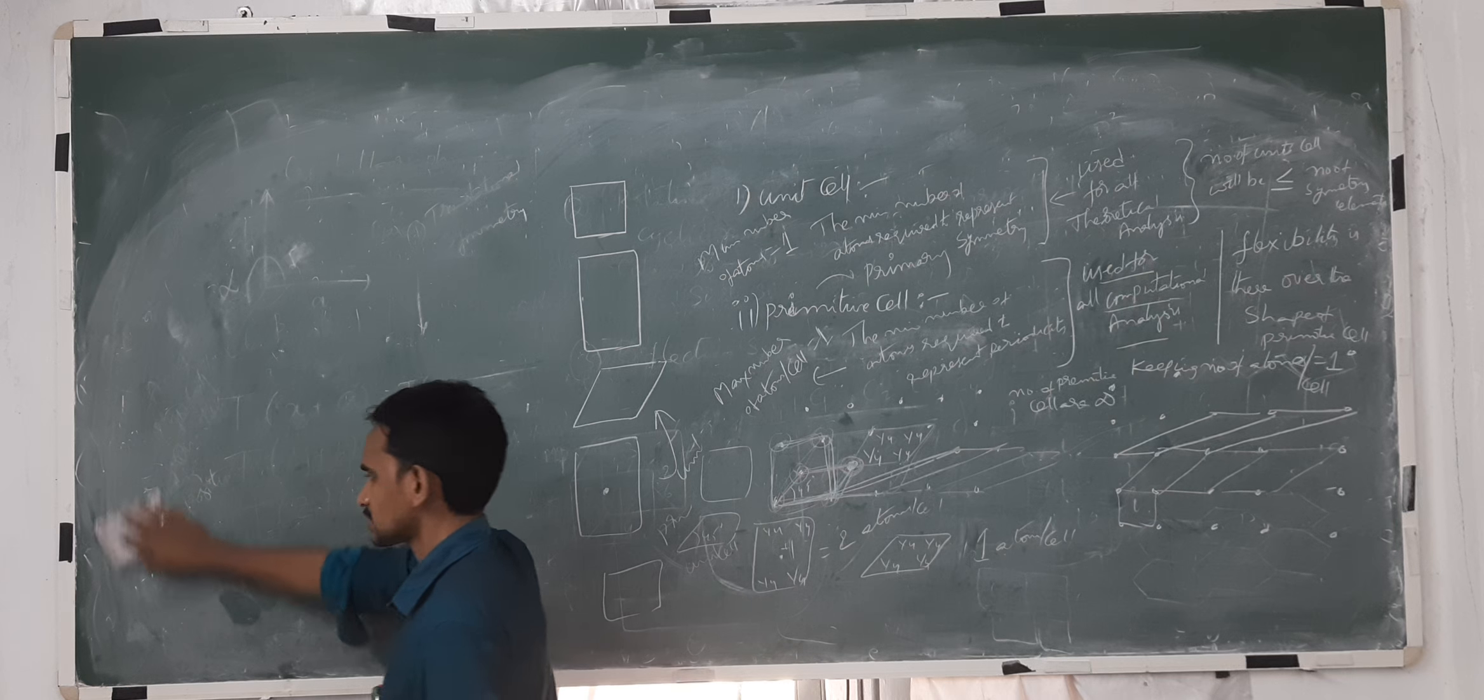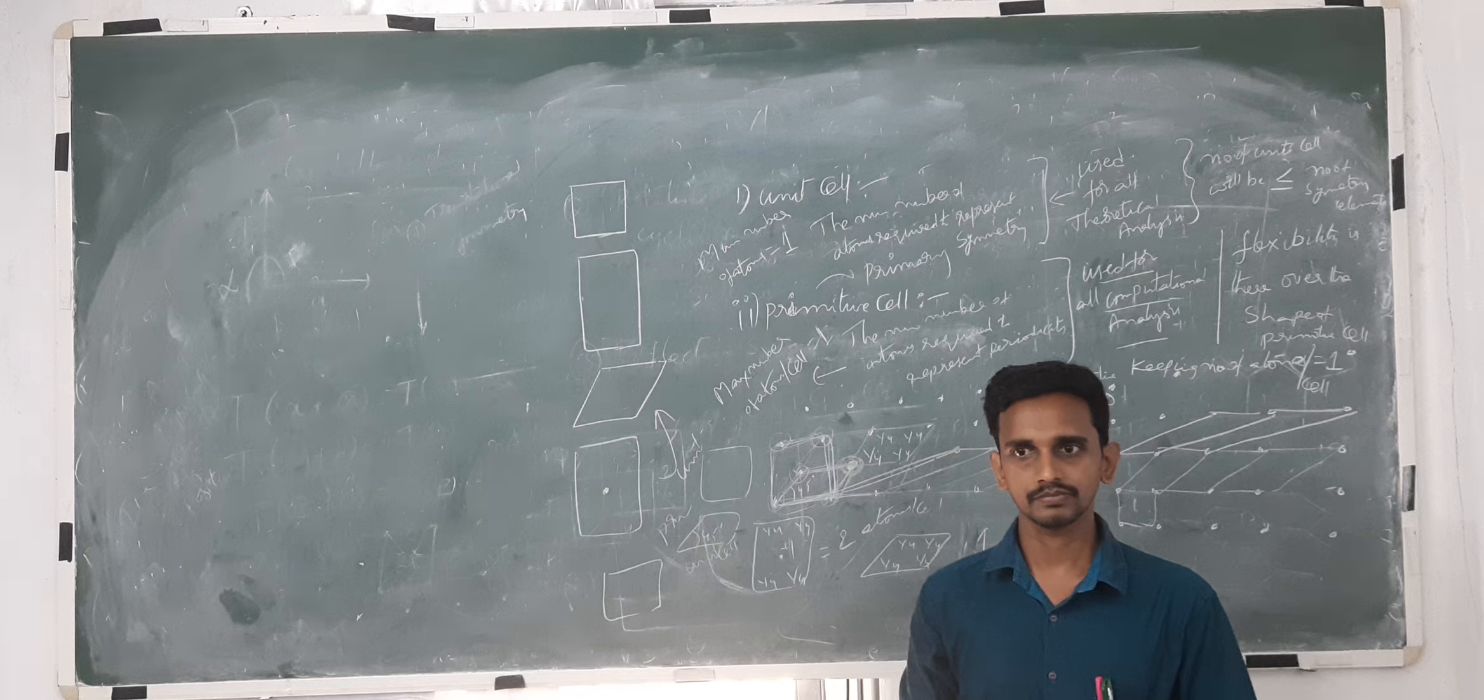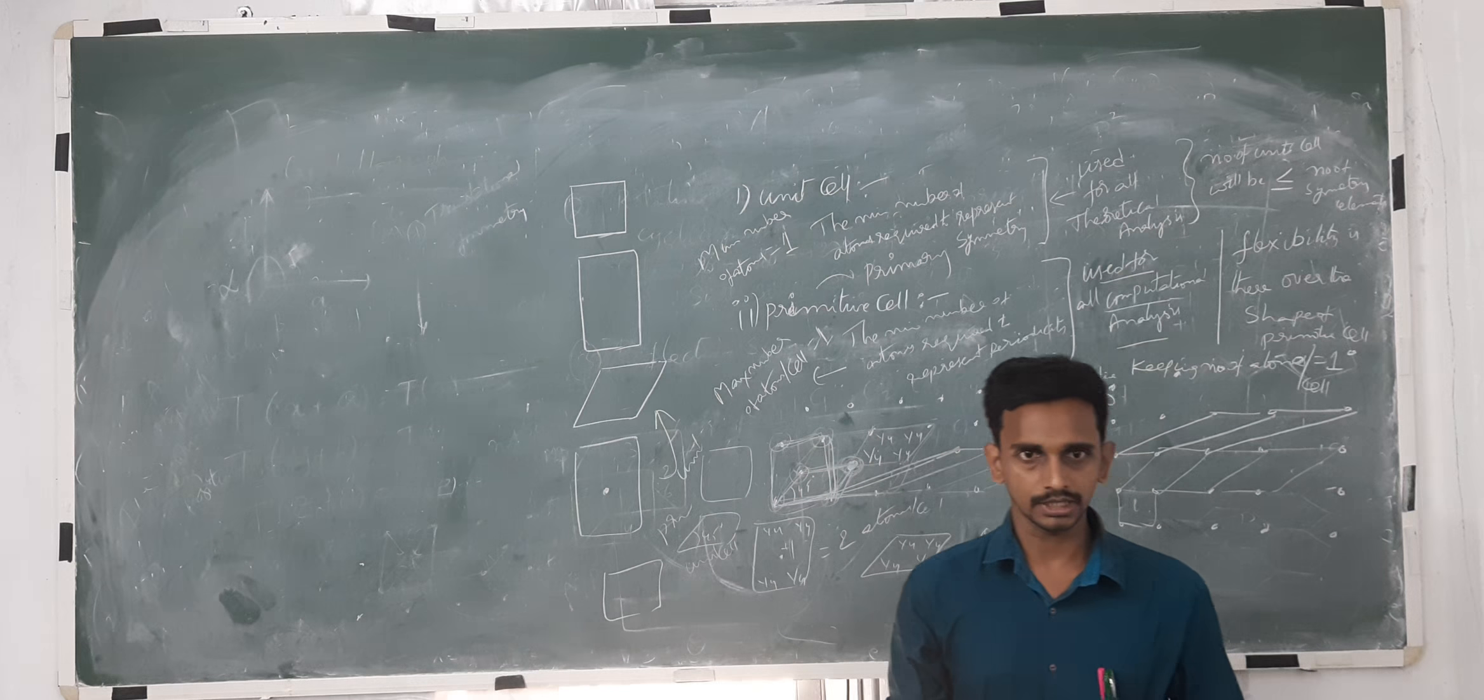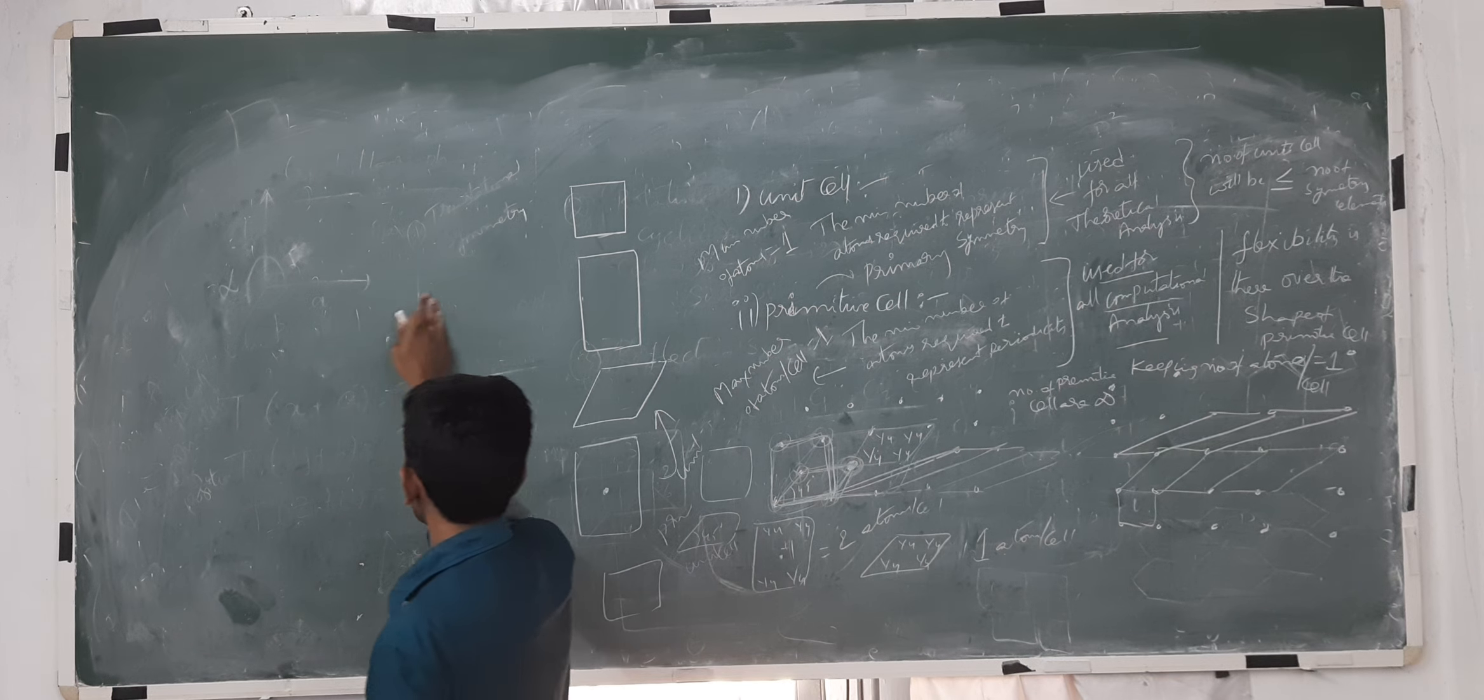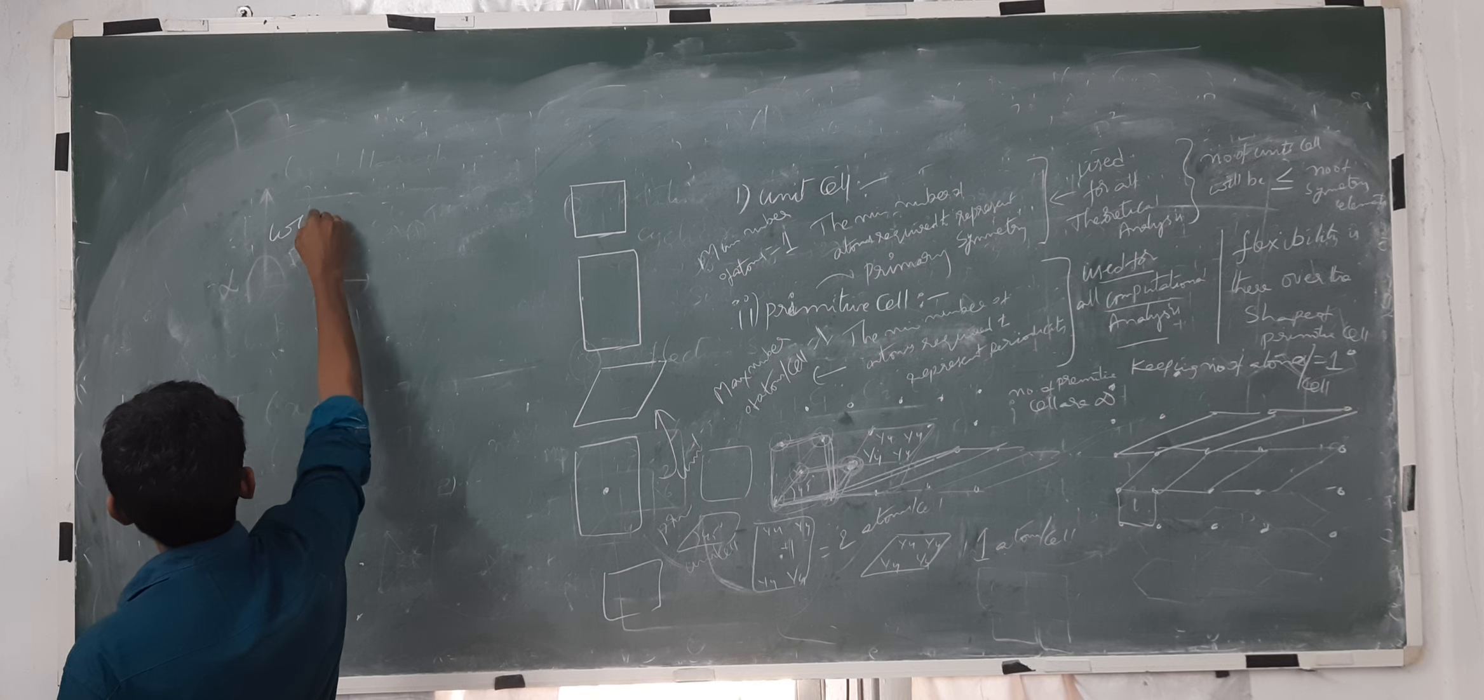The primitive cell is mostly for computational purposes, for all mathematical calculations. The most general definition for primitive cell was given by Wigner and Seitz.